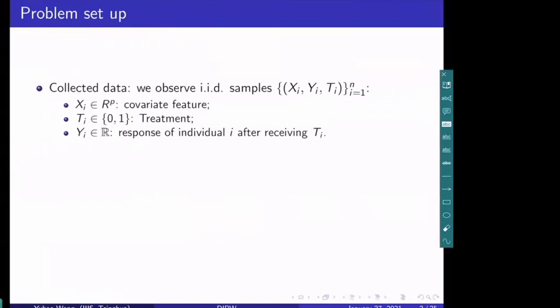Before I talk about my research in detail, let's first start with the problem setup. We consider the setting where we have a collection of N i.i.d. samples X_i, Y_i, and T_i. Here, X_i corresponds to the covariate features — for example, the sample features of each individual i, such as each individual's gender, height, body temperature, or some other features.